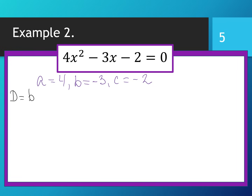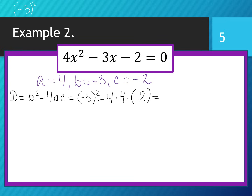Discriminant equals b² - 4ac. That would be (-3)² - 4 × 4 × (-2). Remind your algebra rule: (-3)² = (-3) × (-3) = 9. We must carefully use parentheses. So it would be 9 - 4 × 4 × (-2). That gives 9 - (-32), which means 9 + 32 = 41.